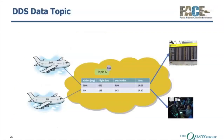Before we go into the demo, let me give a little background on DDS. In DDS, you have the concept of a virtual data space. Applications can publish or subscribe to that virtual data space. You're basically defining topics with just the information you want to exchange, and then you can publish it. Whoever subscribes or is interested in it can receive it. You can subscribe with different attributes.